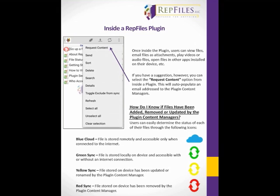If you see a yellow sync, that means the file stored on your device has been updated or renamed. The red sync icon means it's been removed from the plugin. Check back within Repfiles frequently as we're adding new content, and keep in mind: if you don't want to take up a lot of room — one and a half to two gigs worth of data — keep it in online mode only and be very selective with what you keep synced to your device at all times. Thanks for listening, take care.